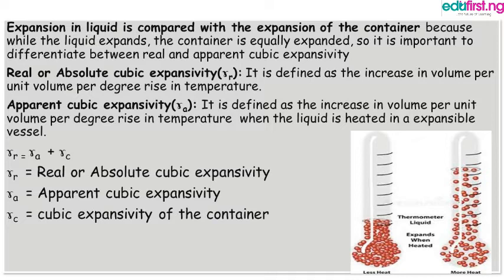Apparent cubic expansivity is represented with gamma subscript a. It is defined as the increase in volume per unit volume per degree rise in temperature when the liquid is heated in an expansible vessel, that is a container that can also expand. The formula is: gamma-r equals gamma-a plus gamma-c, where gamma-c is the cubic expansivity of the container.